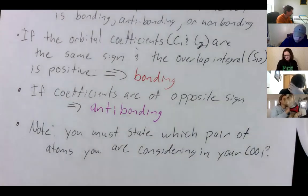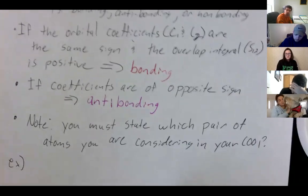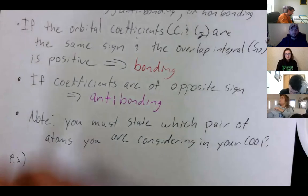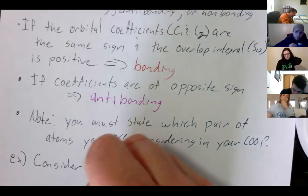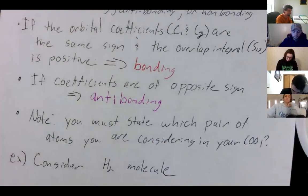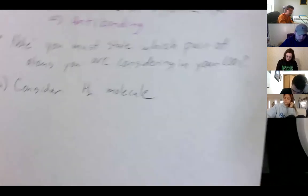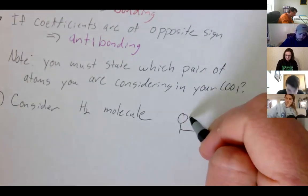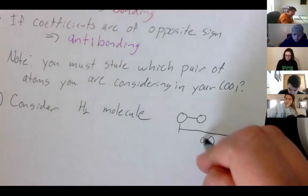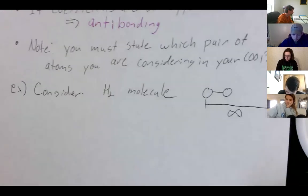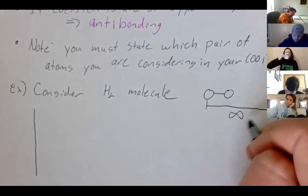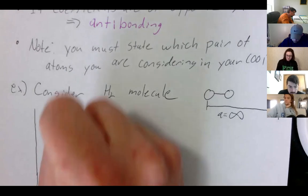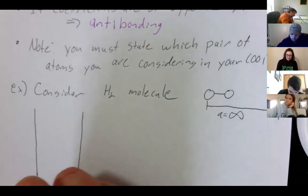For our first example, let's consider the H2 molecule and look at its DOS, band structure, and COOP. In this case we have a 1D hydrogen chain but the distance between adjacent molecules is infinite. Let's plot the band structure: axes are k from zero to π/a and energy. For a molecular system it's not a continuum of states — it's flat lines.